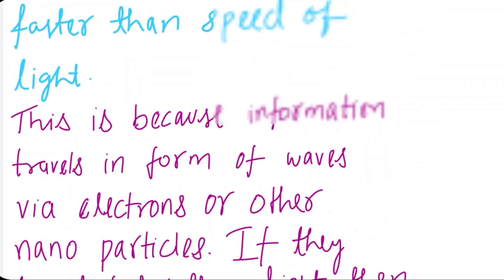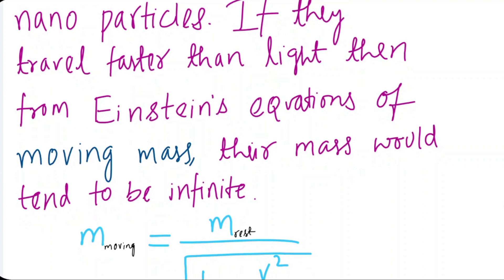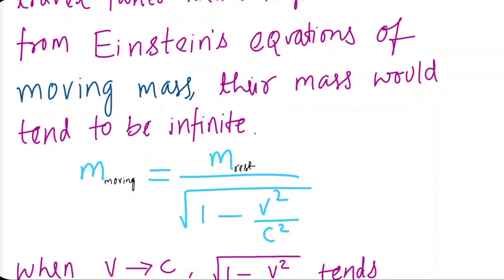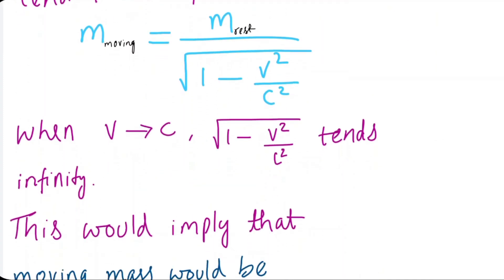If those particles travel faster than speed of light, then from Einstein's equations of relation between moving mass and rest mass, their own mass would tend to infinity and the moving mass would be undefined.